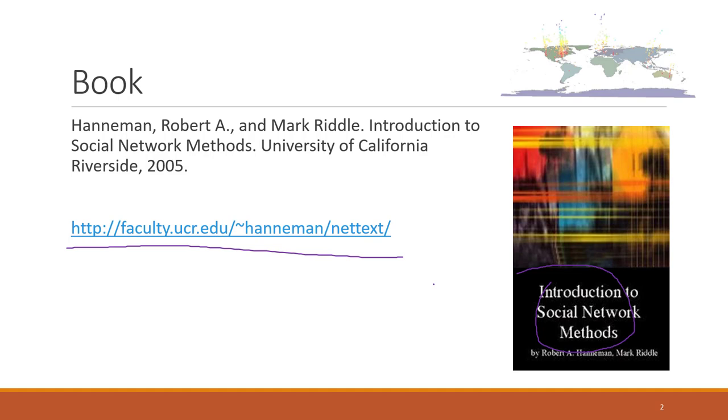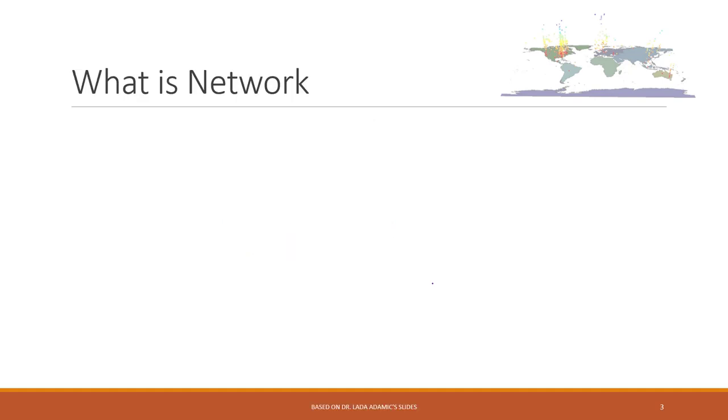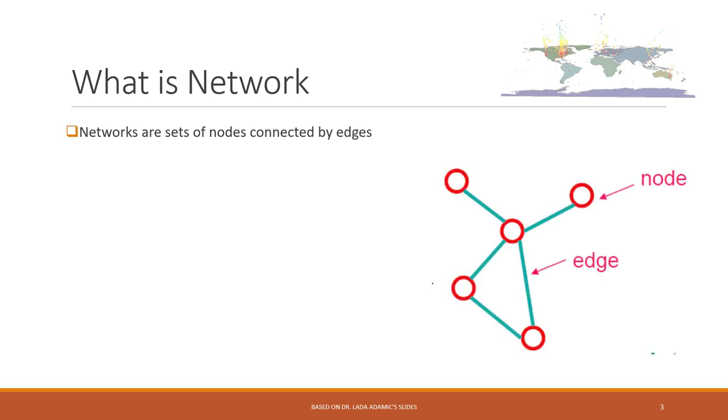What is a network and why is it important? Networks are just sets of nodes that are connected by edges. Here we see nodes connected by edges, and networks can be used to represent objects in the real world.